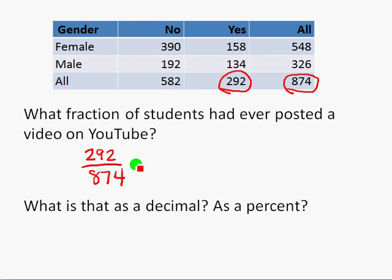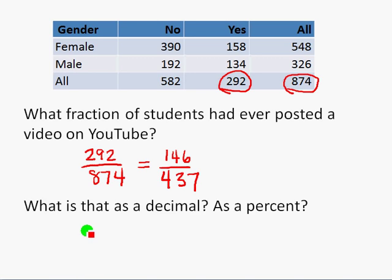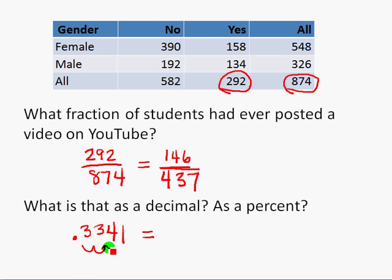Sometimes we report an answer like this as a fraction — we may leave it as is, or put it in lowest terms. In lowest terms, this is 146 over 437, found by dividing numerator and denominator by 2. We may also report as a decimal by dividing 292 by 874. Rounding to 4 decimal places, we get .3341, which as a percent is 33.41%.